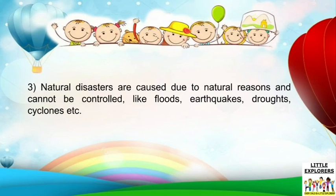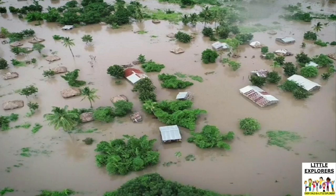Natural disasters are caused due to natural reasons and cannot be controlled, like floods, earthquakes, droughts, cyclones, etc. You can see the real image of a flood on your screen.